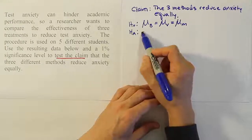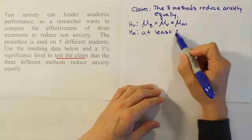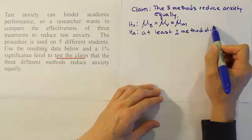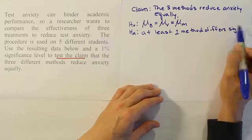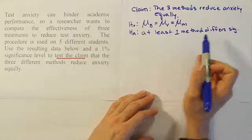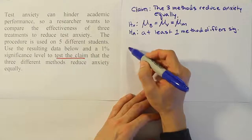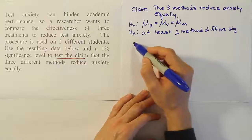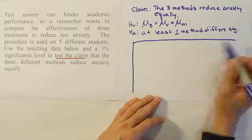Hₐ is that at least one method differs significantly from the others. After stating our hypotheses, we move to the data steps. Let's set up our ANOVA table and fill it in after we analyze our data.